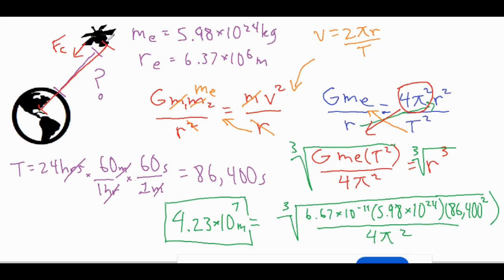So if we want the actual height off the surface of the earth we're going to have to take the 4.23 times 10 to the seventh meters and then subtract the radius of the earth. And then once we subtract the radius of the earth then our final answer becomes 3.59 times 10 to the seventh meters.